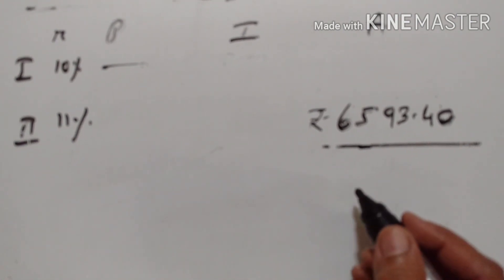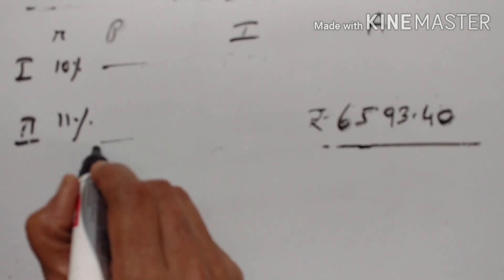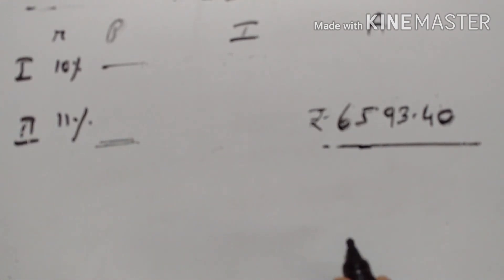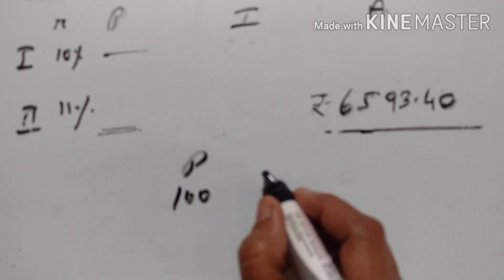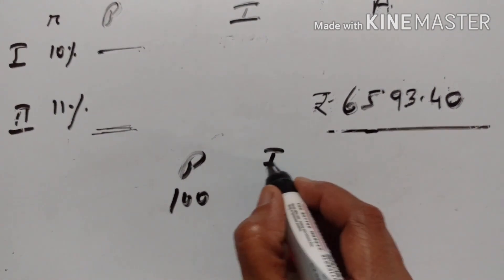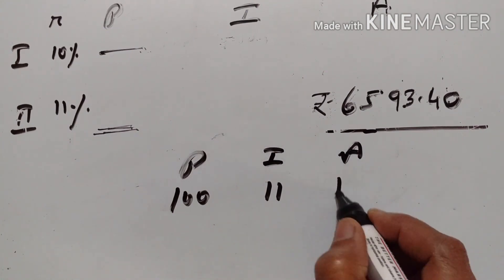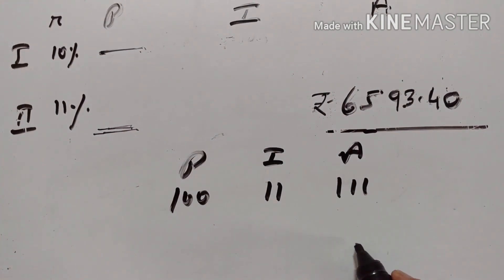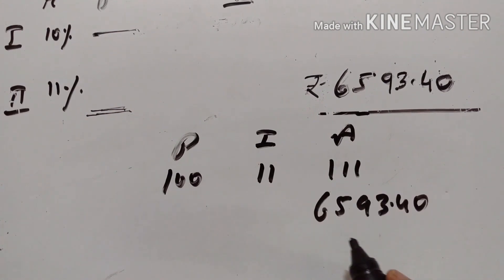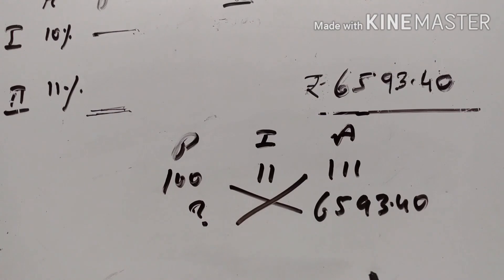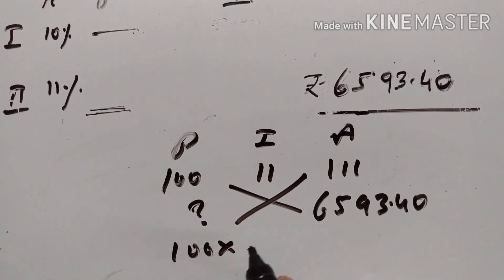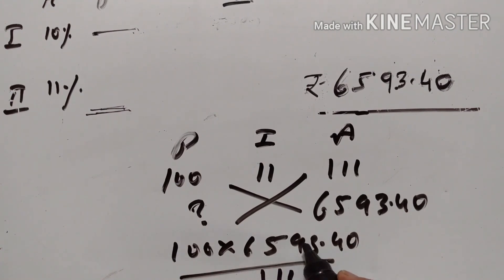Let us find the principal of the second year first. If the principal is 100, the interest is equal to 11%, then the amount becomes 111. So if the amount is Rs. 6593.40, what is the principal? 100 into 6593.40 divided by 111.